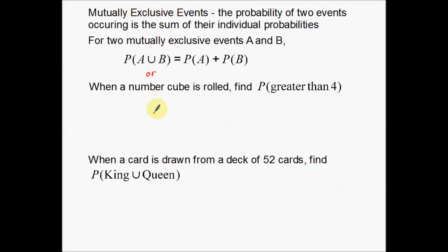As long as they are exclusive from one another, which means either one of them can happen or the other, but not both. So here's a couple of examples. When a number cube is rolled, when you roll a number cube you get the numbers one through six. We want to find the probability of getting a number that is greater than four.